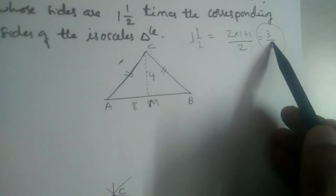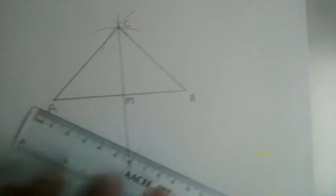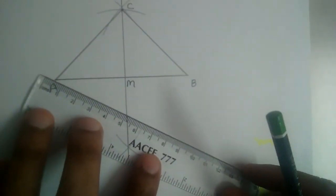To this triangle we should construct a triangle whose sides are 3 by 2. Corresponding sides should be 3 by 2. So we should draw a ray here.